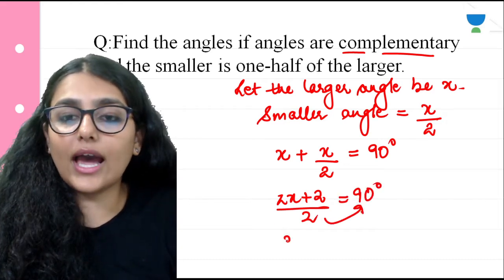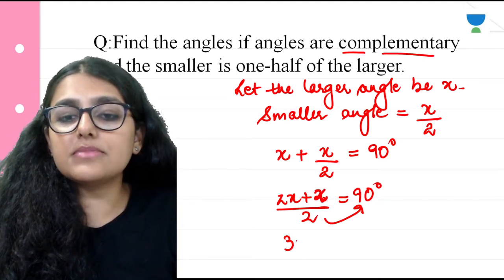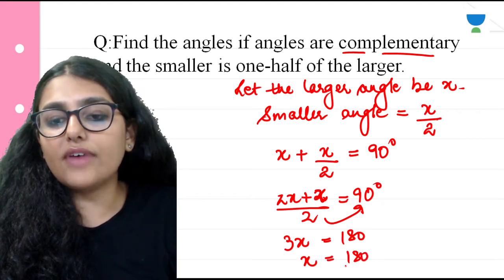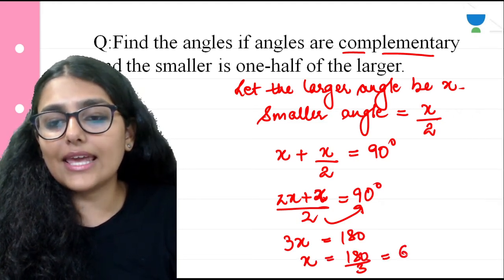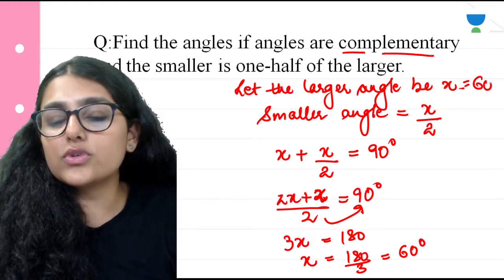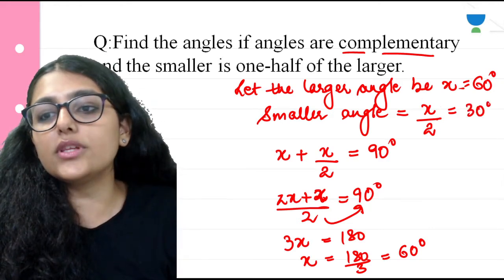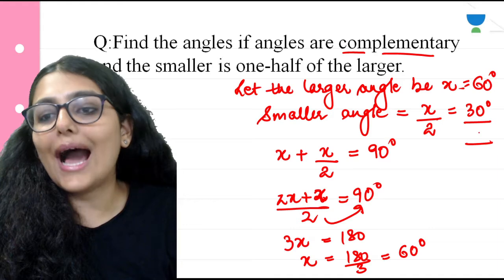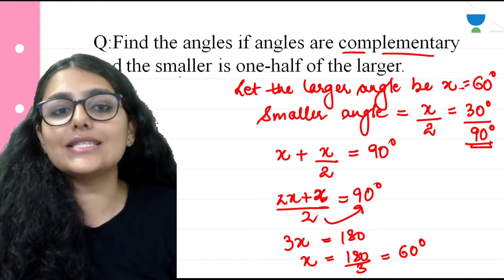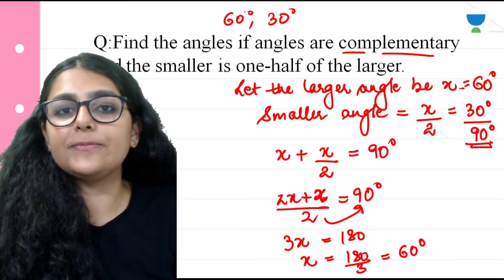So 3x equals 180, therefore x equals 180 divided by 3, which is 60. The larger angle is 60 degrees, and the smaller angle is half of 60, which equals 30 degrees. When you add both, you get 90 as the answer — therefore these are complementary angles and the smaller angle is half of the larger angle.